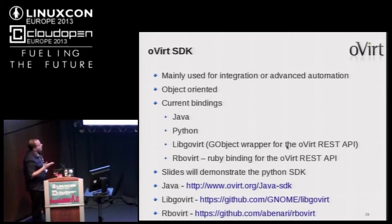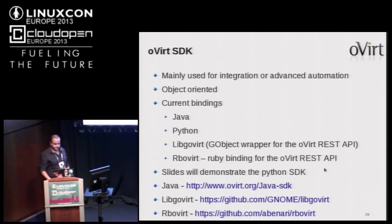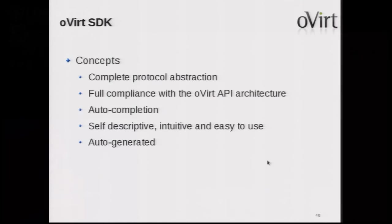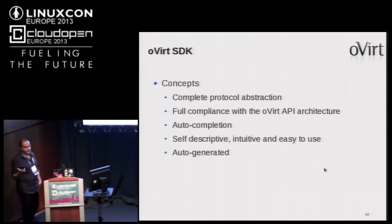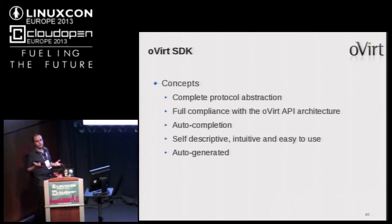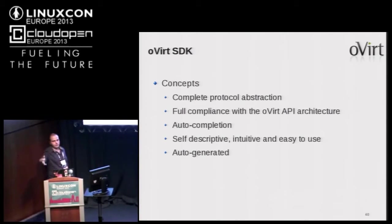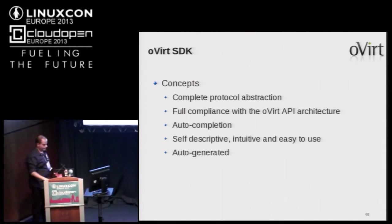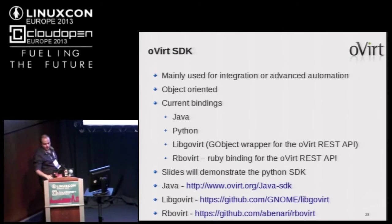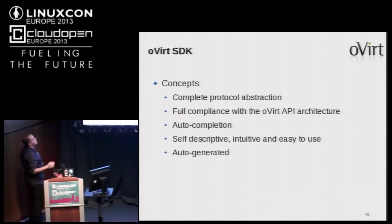The examples I'll show are for the Python SDK — the Java SDK is similar, just in Java. The SDK concepts include complete protocol abstraction, full compliance with the oVirt API, and it's auto-generated. So once we have a new change to the API, if we do it properly, it propagates from the engine to the API to the Python SDK, Java SDK, and CLI — everything is updated automatically.